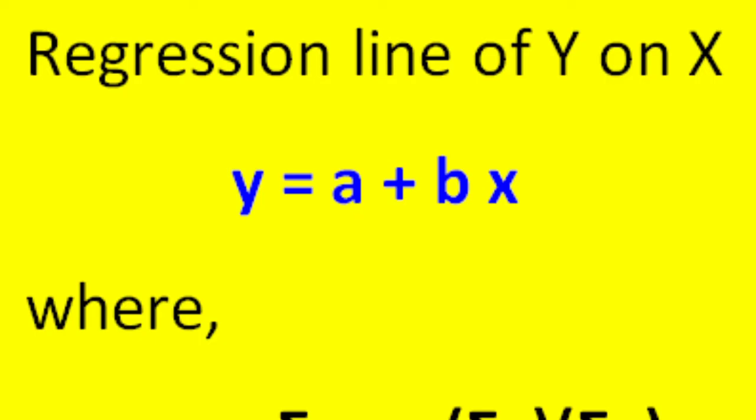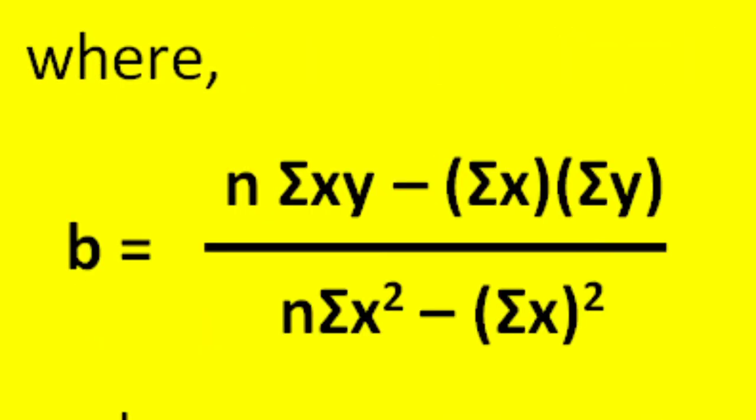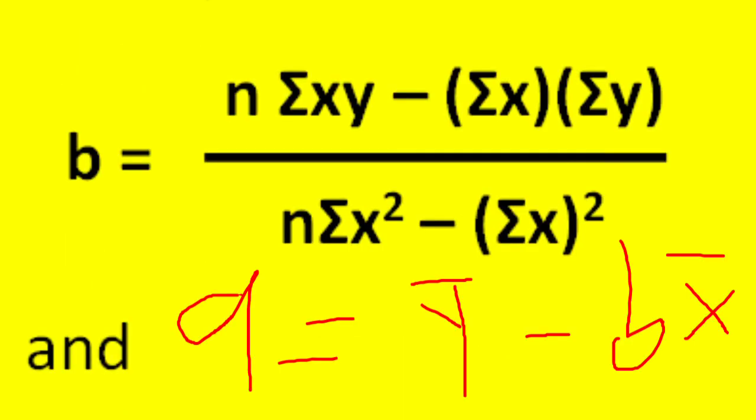Let's look at the regression formula. The regression line of y on x is calculated using the formula y equals a plus bx. Whereby we calculate for b using the formula n summation xy minus summation x times summation y over n summation x squared minus into bracket summation x squared. And that is how we calculate for b. And we calculate for a using the formula y bar minus bx bar.